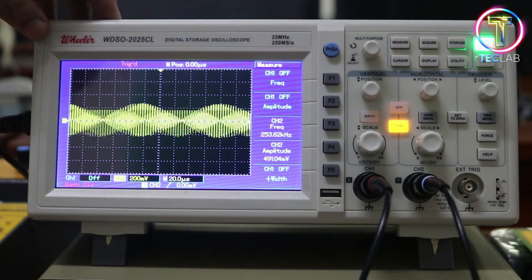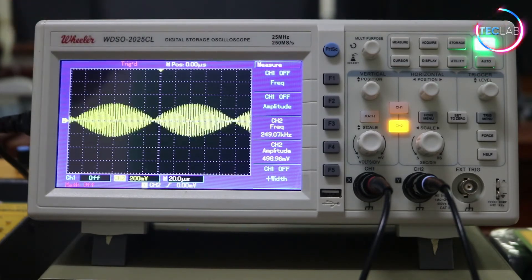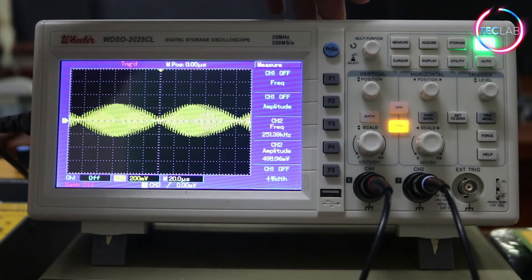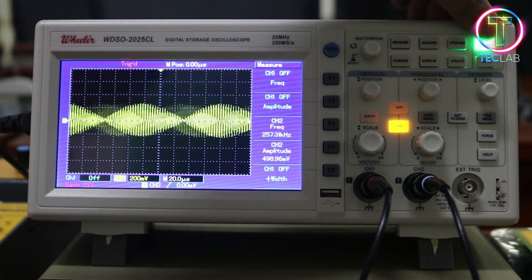Okay, so to clearly view the waveform, let us pause our signals using this run-stop button on the oscilloscope.